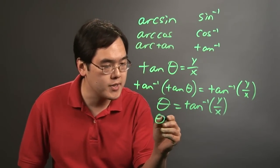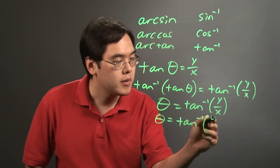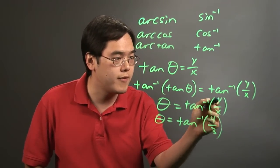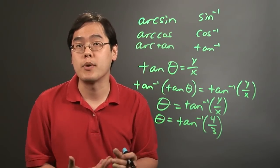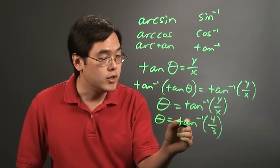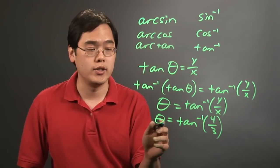For example, if you wanted to find what that is, this is where a calculator becomes very handy. Suppose if y was 4 and x was 3, what you want to do is, on your calculator, and make sure that it's in the proper mode, literally enter tan inverse of 4 thirds, and that'll give you what the angle happens to be.